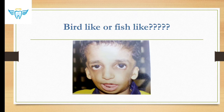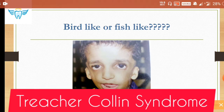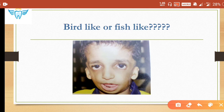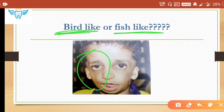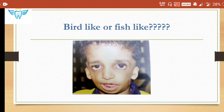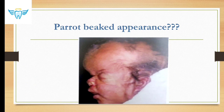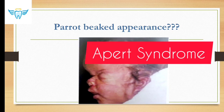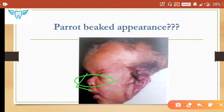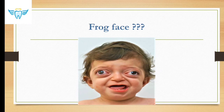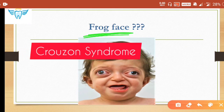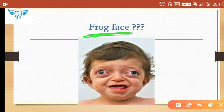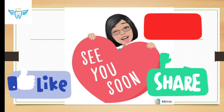Let's practice some image-based recognition. Bird-like or fish-like face is seen in Treacher Collins (mandibulofacial dysostosis) — the peculiarity is hypoplasia of malar bones, hypertelorism, and anti-mongoloid slant. Parrot-beaked appearance is the peculiarity of Apert syndrome. Frog face is characteristic of Crouzon syndrome (craniofacial dysostosis). See you in the next part — don't forget to like, share, and subscribe.